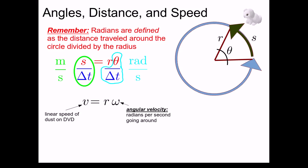Omega, on the other hand, is what we call the angular velocity. It's how many radians did the dust bunny go through per second as it goes around. And these two quantities are connected by the radius of the circle.